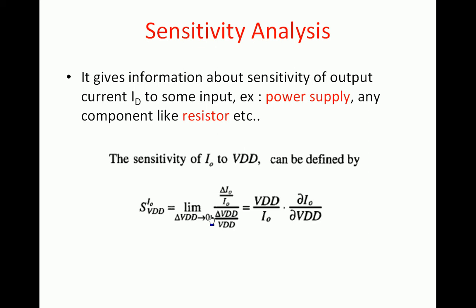We are discussing current mirrors. Till now we have discussed the simple current mirror: gain, output resistance, and minimum voltage across output terminals required to keep the current constant. We covered the disadvantages of the simple current mirror and how to overcome them with the cascode current mirror, its advantages, and the modified current mirror. Other types — Wilson current mirror and regulated cascode current mirror — were named and will be discussed later.